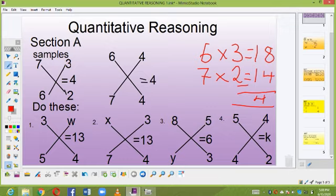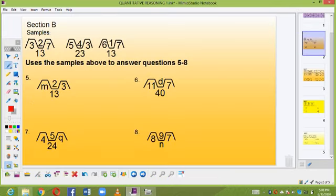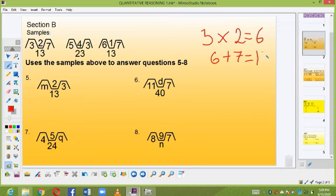Now let's proceed to section B. In section B, first you have to look at the sample before you proceed. 3 multiplied by 2 will give us 6. Now 6 plus 7 will give me 13. Also, use this to find the value of M, Q, D and N.